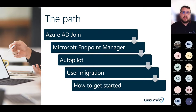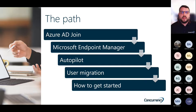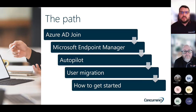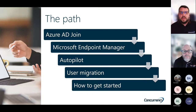So what does that path look like? The first part is enabling Azure AD Join and then configuring Microsoft Endpoint Manager so that we can do Autopilot provisioning. How do we migrate data from users and computers from an old device to a new device? And then some information on how you can get started.